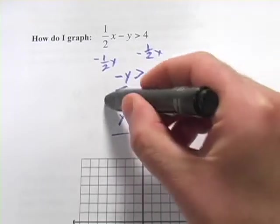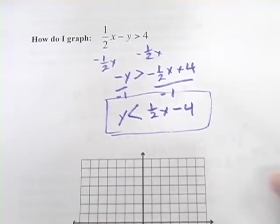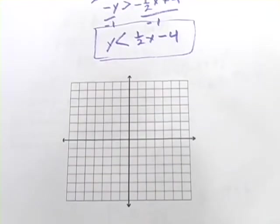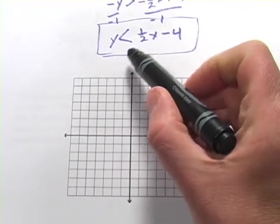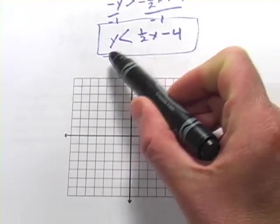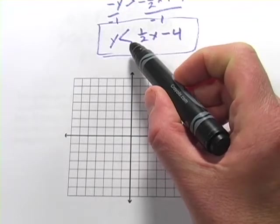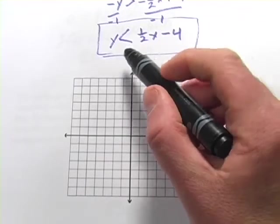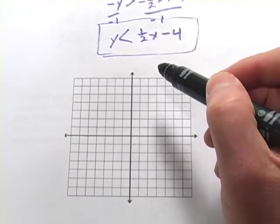Once we've gotten to here, we're pretty much ready to do our graphing. Now, what I'd like to do is sketch in the line first, and because the inequality symbol is less than, and not less than or equal to, I'm going to make this a dashed line, because the line itself wouldn't be included in the solution.